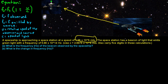Now it says the space station has a beacon of light that emits green light with a frequency of 5.99 times 10 to the 14th hertz. So you've got this green light up here emitting light at a frequency of 10 to the 14th hertz.